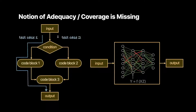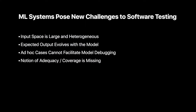Finally, the notion of adequacy or coverage is missing for ML testing. Traditional notions of software coverage, shown on the left, require just two test cases to cover all branches. However, this is not the case for the neural network on the right — it is a black box with no decomposable logic branches. Inside the code, you will only find a series of matrix multiplications and functional transformations. So it is very hard to tell how much testing is enough for ML systems. These are the four main challenges, and next I'll present our proposed paradigm to address each of them.